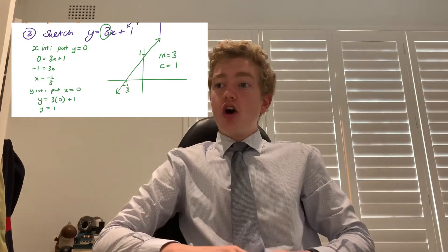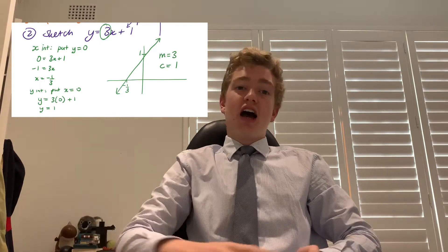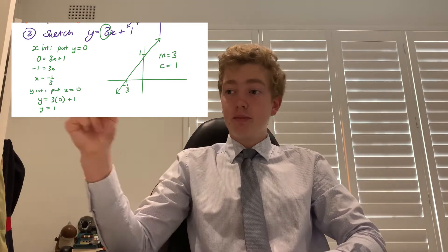Another example: y = 3x + 1. The y-intercept is obviously 1 — the number at the end. To find the x-intercept, set y = 0: 0 = 3x + 1, take 1 off both sides, so −1 = 3x, giving x = −1/3. That's our x-intercept. Plot both points on the number plane, draw a straight line through them, and your line is graphed.